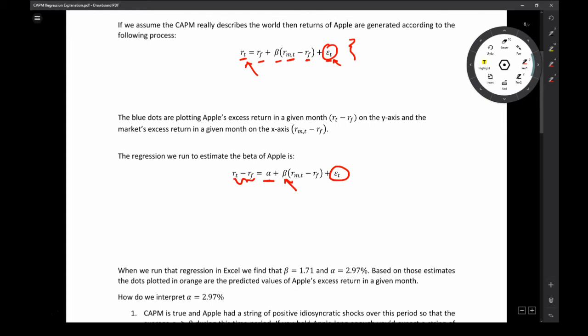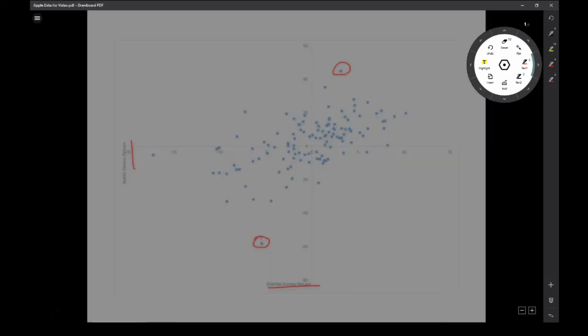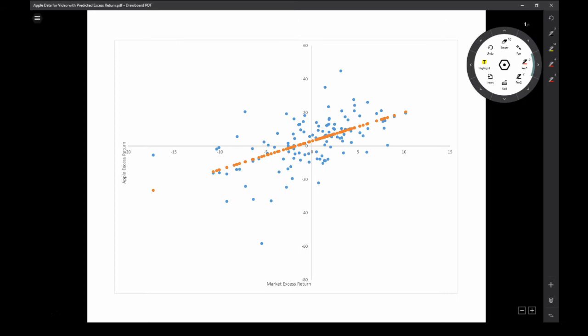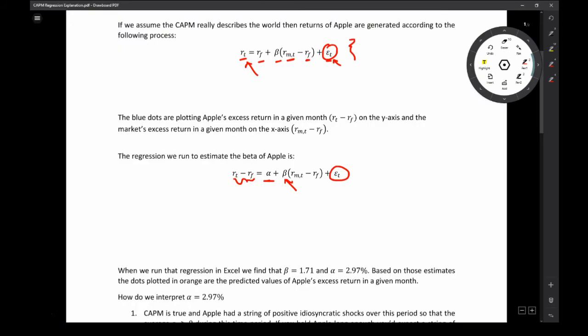So when I estimated the beta, which is acting as a sensitivity measure to market returns, I estimated a beta of 1.71. And I calculated an alpha of 2.97. Now that alpha is very ridiculously high, but this was a weird time period.